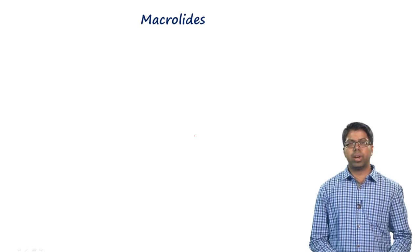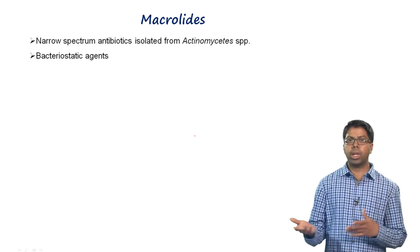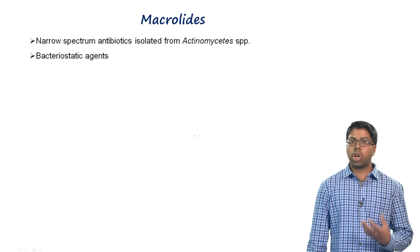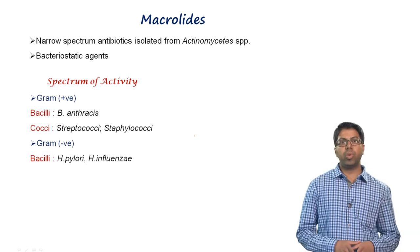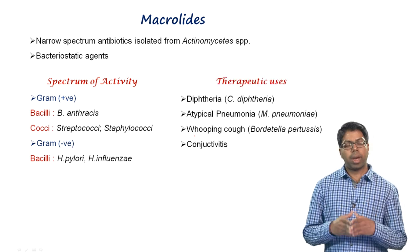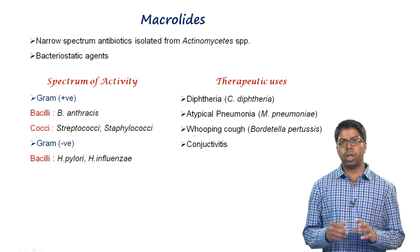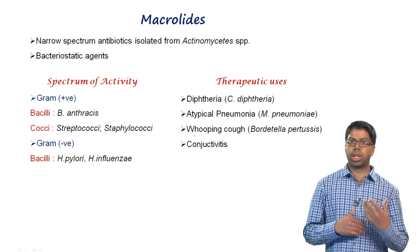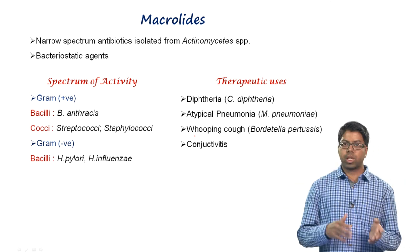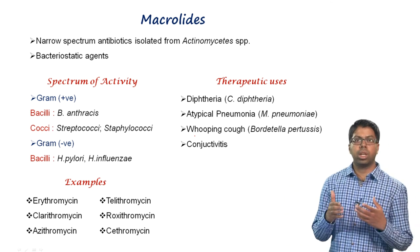Macrolides are among the most widely prescribed antibiotics. They are narrow-spectrum bacteriostatic agents isolated from actinomycetes species, predominantly used to treat gram-positive infections and active against limited gram-negative bacteria such as Streptococcus, Staphylococcus, Helicobacter pylori, and Haemophilus influenzae. They are prescribed for respiratory tract infections including atypical pneumonia, whooping cough, Clostridium diphtheriae (diphtheria), and conjunctivitis. Examples include erythromycin, clarithromycin, telithromycin, and azithromycin.